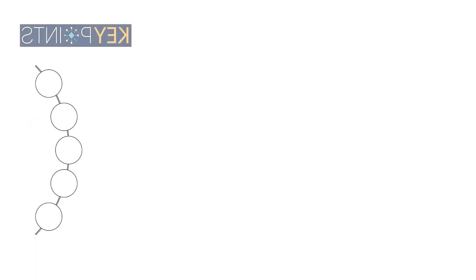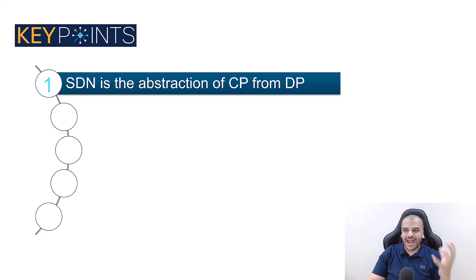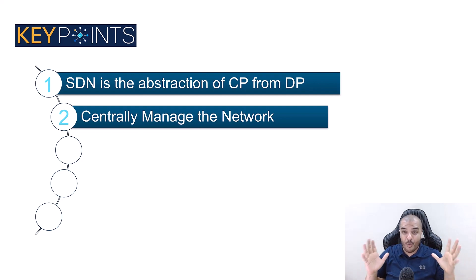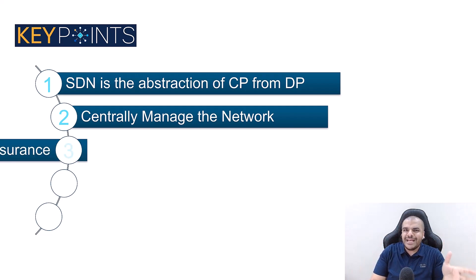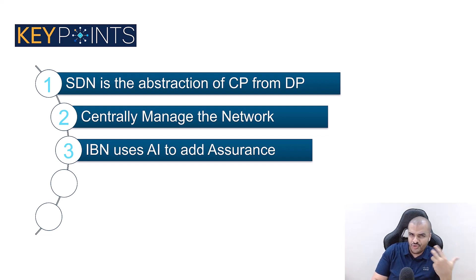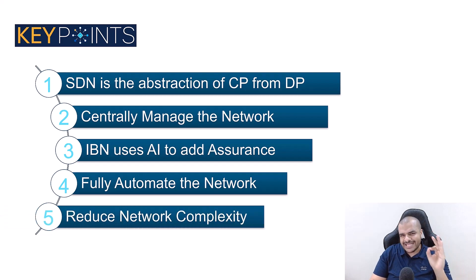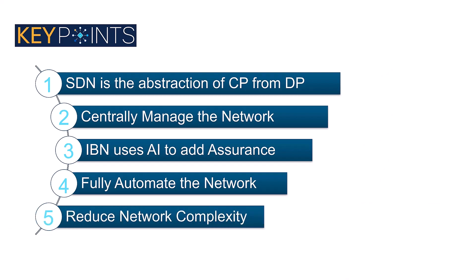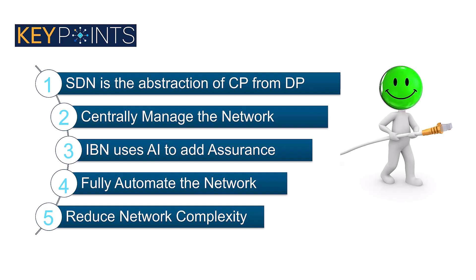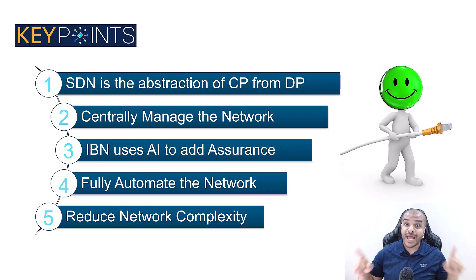Let's hit the key points for today. SDN is the abstraction of the control plane from the data plane, which centrally manages your network, automates it, and makes it easier on network engineers. IBN uses AI and artificial intelligence to add assurance, telemetry, monitoring, and troubleshooting to your network, which fully automates the network and reduces network complexity — which will eventually make Mr. Key happier. I'll be waiting for you again here at Cisco U, and we'll always experience new key points about networking. Thanks for watching.